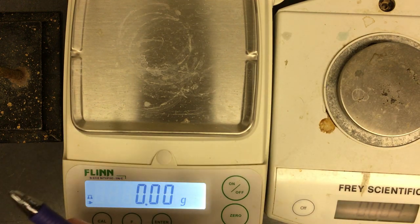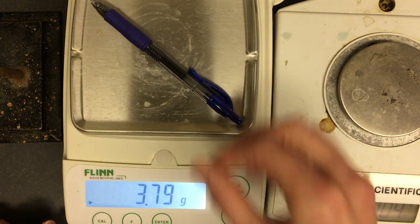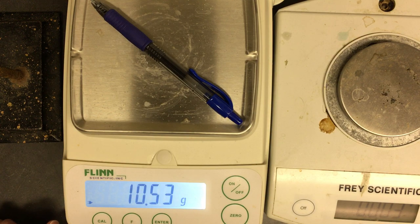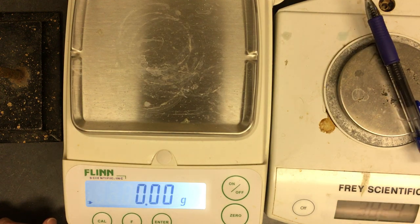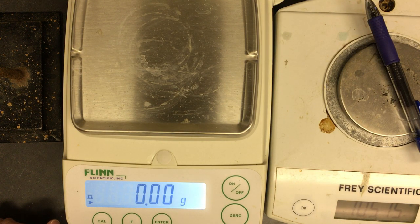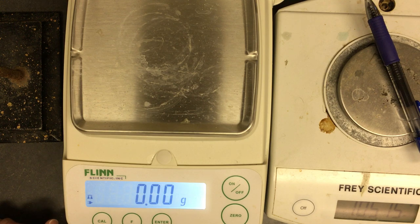Now we're going to measure a pen. So there's the pen on the centigram balance. And there's the pen on the milligram balance. That says 10.515.